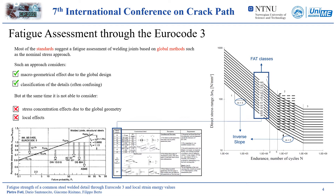Dealing with the fatigue assessment of the joints, the standards consider mostly global methods, like the nominal stress approach, even if the nature of the fatigue phenomenon is local. The nominal stress method considers the nominal stresses in the critical cross-section and compares them with the SN curves that correlate the fatigue strength versus the number of cycles to failure. The standards define the so-called FAT classes, which represent the fatigue strength at 2 million cycles for the joints considered, and suggest for the Wöhler curves the same inverse slope in a bilogarithmic diagram for all the details. It is worth underlining that the classification of the standards is not so satisfactory, having missing parameters even with very simple cases, and it results sometimes difficult to read, leading to possible misunderstanding.